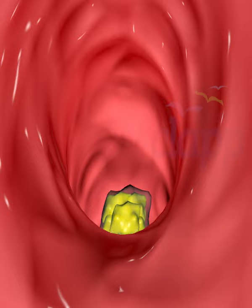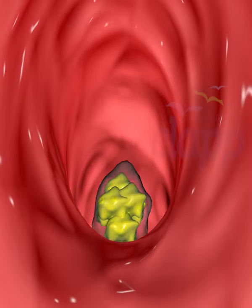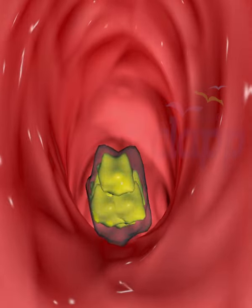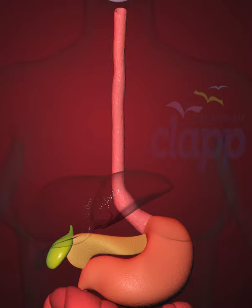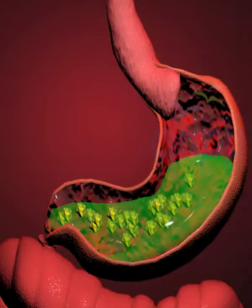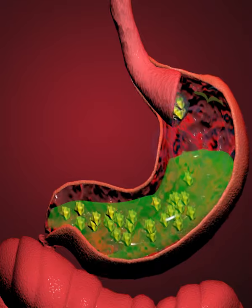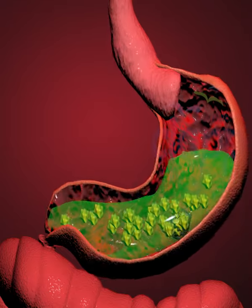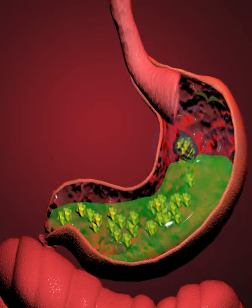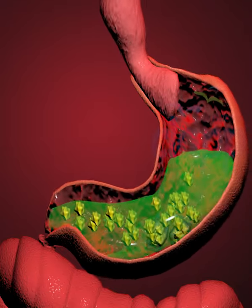Once you begin swallowing, the process becomes automatic. Muscles in your esophagus propel food down to your stomach. A ring-like muscle called the lower esophageal sphincter relaxes and lets food pass into the stomach.